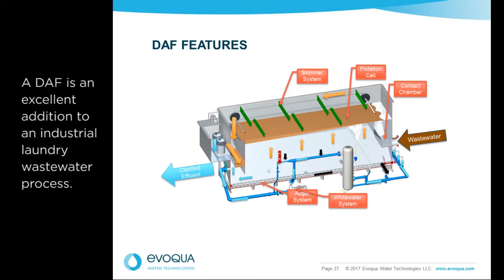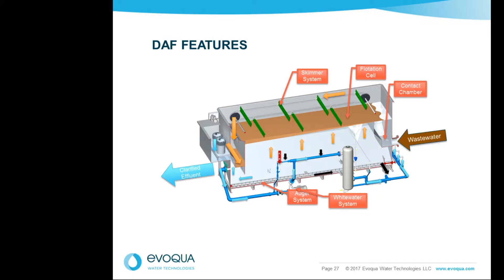Next, there is a flotation cell, which is the surface area within the tank where the bubble-particle matrix floats to the surface and forms a float layer. To remove that floating material, there is a skimmer system — in this case, a flat chain system that pulls material across the surface of the water, drops it into a hopper, and from there it's pumped for either dewatering or disposal.